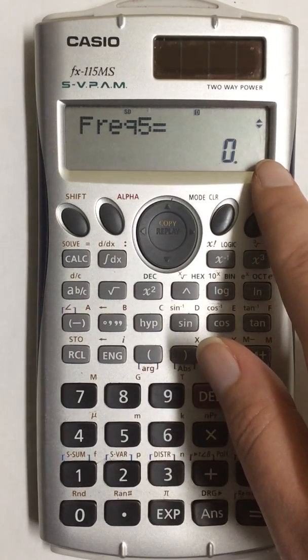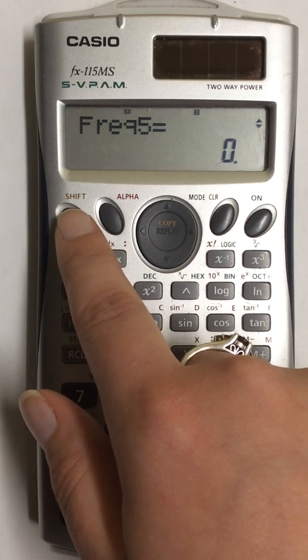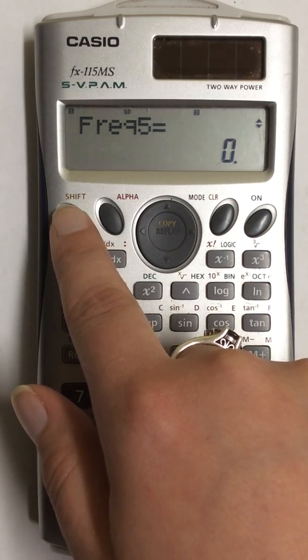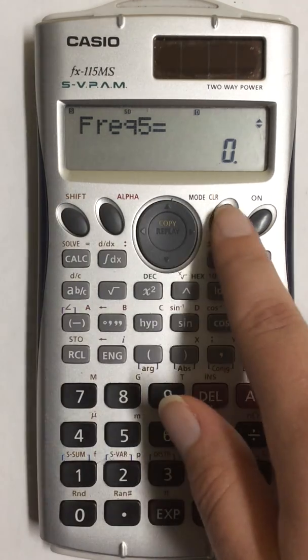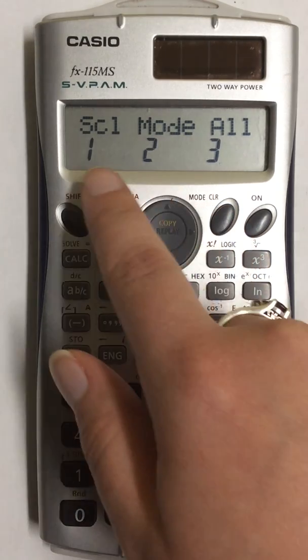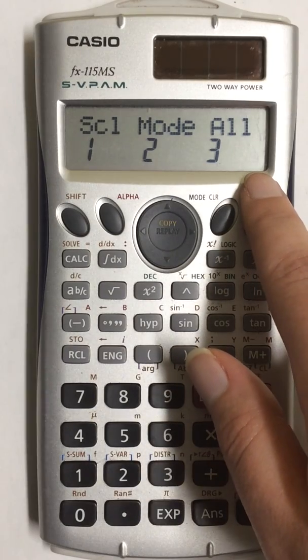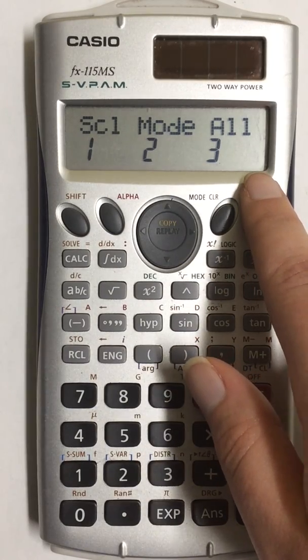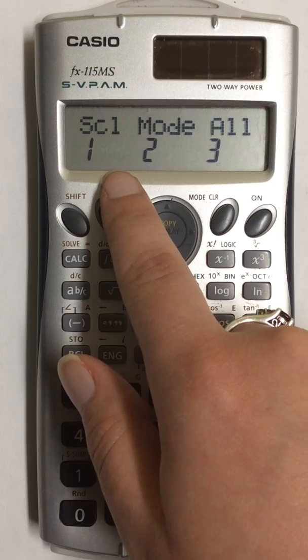what you have to do is press the shift button and come over to clear. You have these three options here. So you're going to press number 1, which is S-C-L.